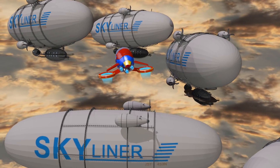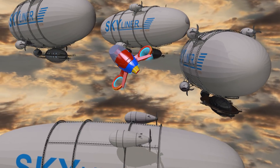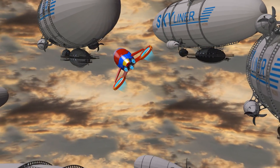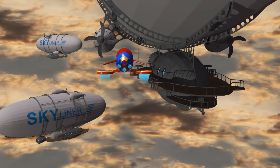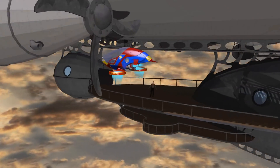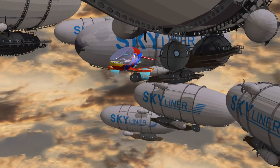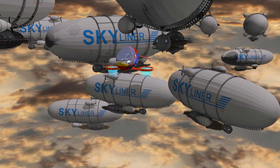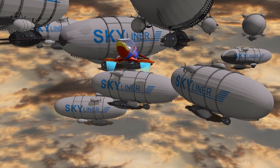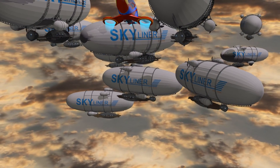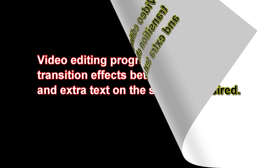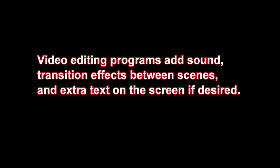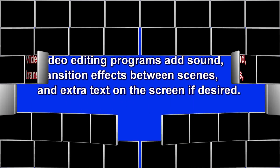For this task, many of the videos on this channel used the video editing software PowerDirector, but there are a lot of other options available, including free video editing software that typically comes pre-installed with many computers. It is with these video editing programs that you will add sound, transition effects between scenes, and extra text on the screen if desired.